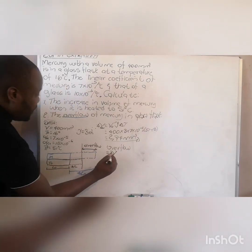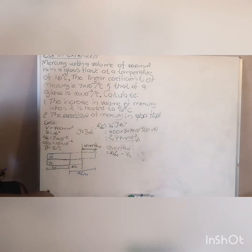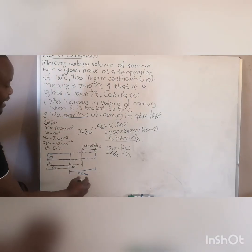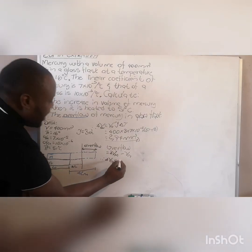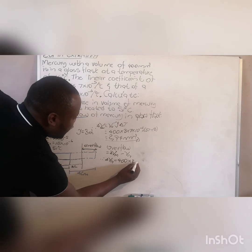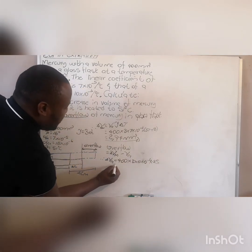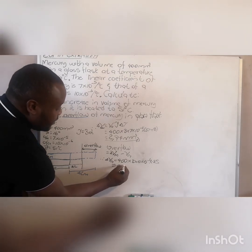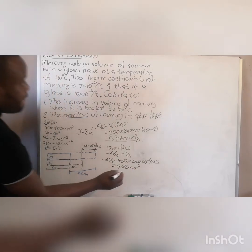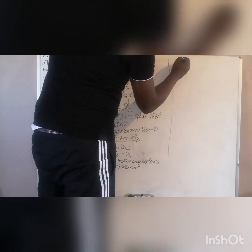The overflow equals the change in volume of mercury minus the change in volume of the glass. You already have the change in volume of mercury. Now calculate the change in volume of the glass: it is 400 times 3 times 10 to the negative 6, times 35 (the change in temperature). This gives 0.42 millimetre cubed.